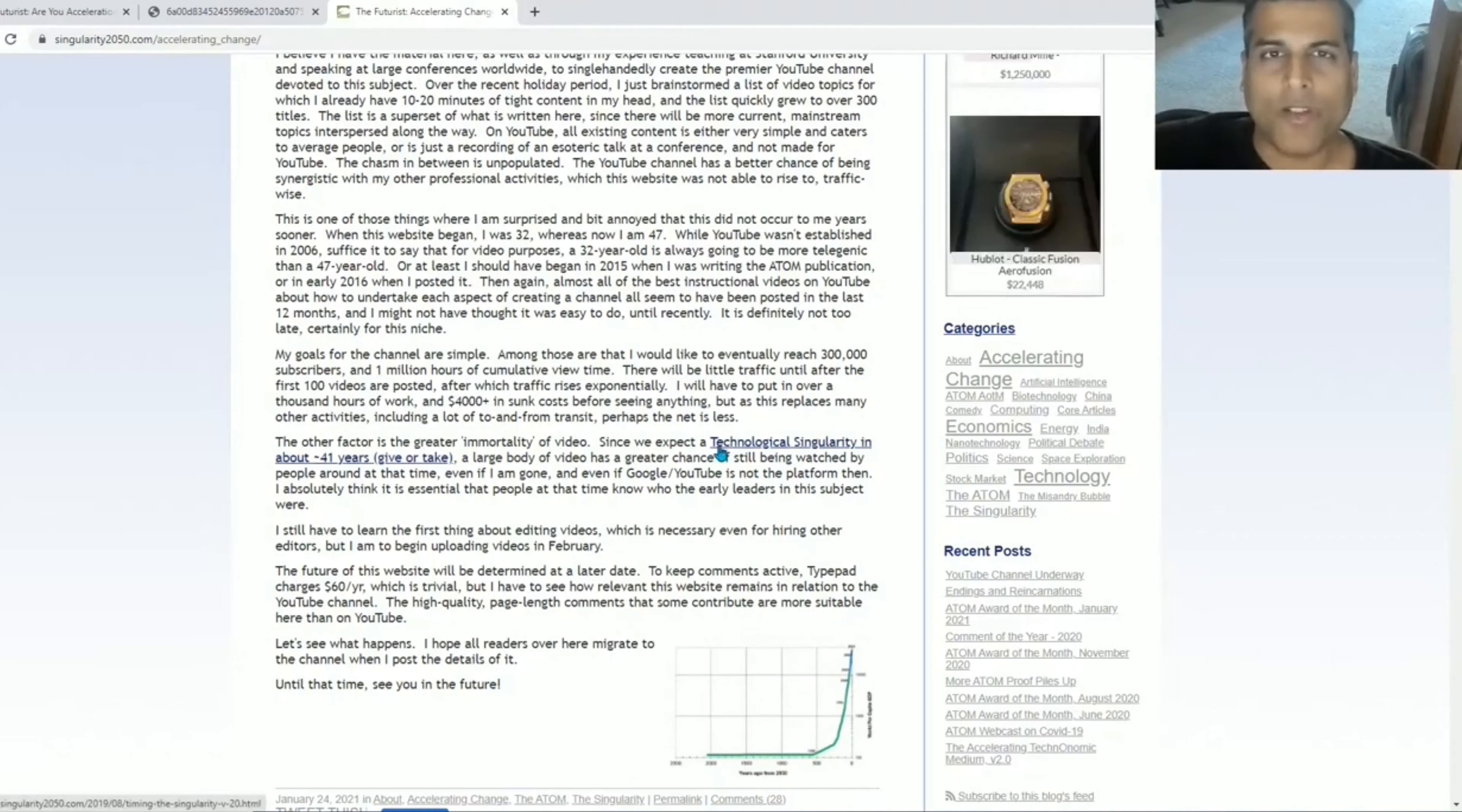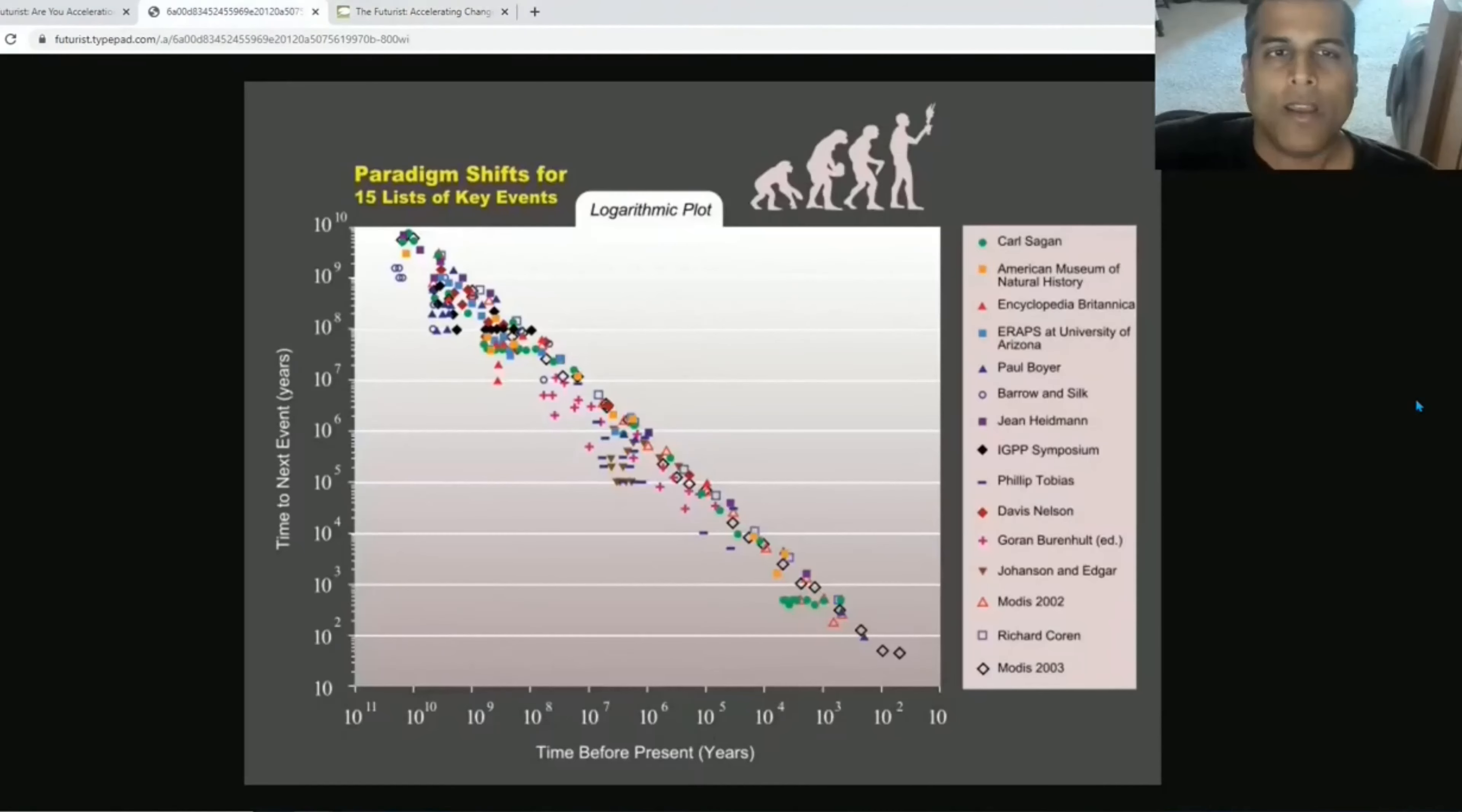This takes us to the most famous contributor to the field of the accelerating rate of change. He does have a book coming up in 2022, but he has not written much after 2008 other than this upcoming book. That's Ray Kurzweil. He produced this chart in one of his books, The Singularity is Near, which I have reviews for on this channel. This is one of the most comprehensive and indisputable pieces of evidence of the accelerating rate of change.